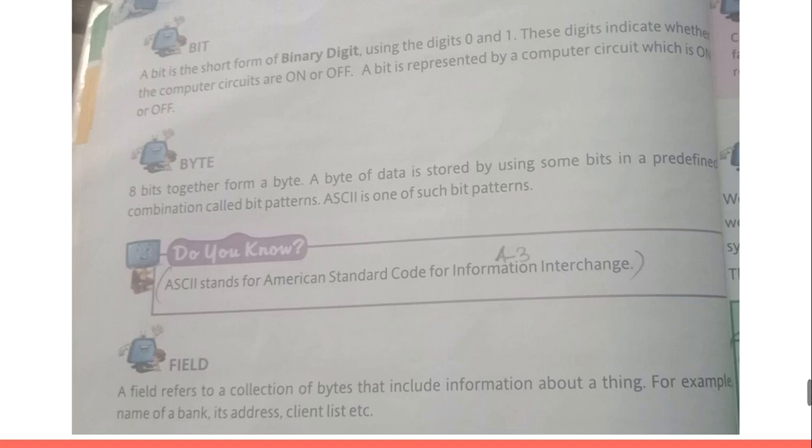These bits are based on a particular type of coding called ASCII, which stands for American Standard Code for Information Interchange, meaning that eight combinations of zeros and ones make a character or a byte.